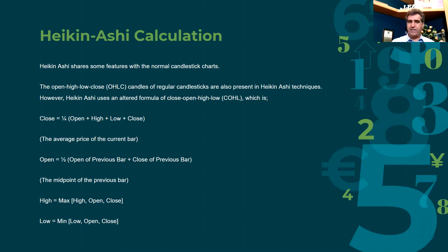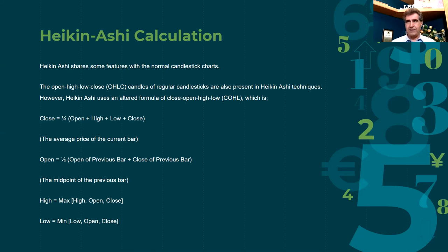That's where the differences are. As far as the high and low — the high is the maximum of the current bar's high, open, and close, while the low is the minimum of the low, open, and close. By doing this — marrying two candles — it gets rid of some of the noise and makes it smoother and more visually pleasing.